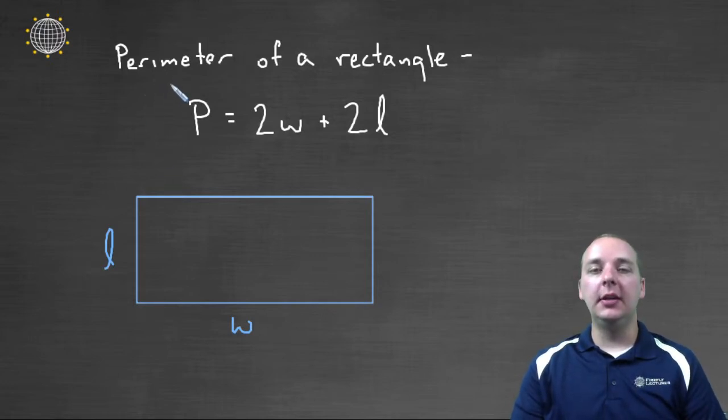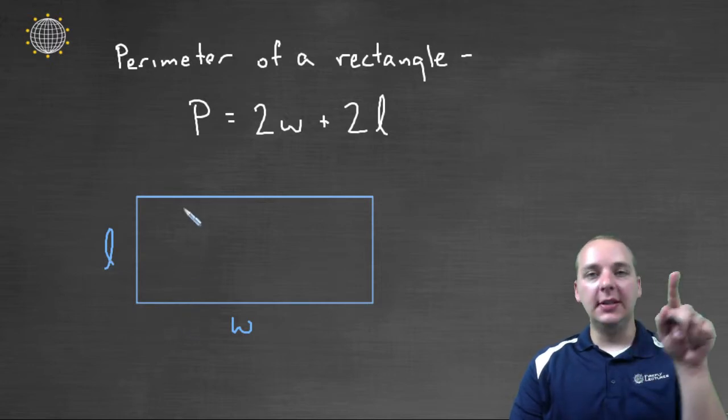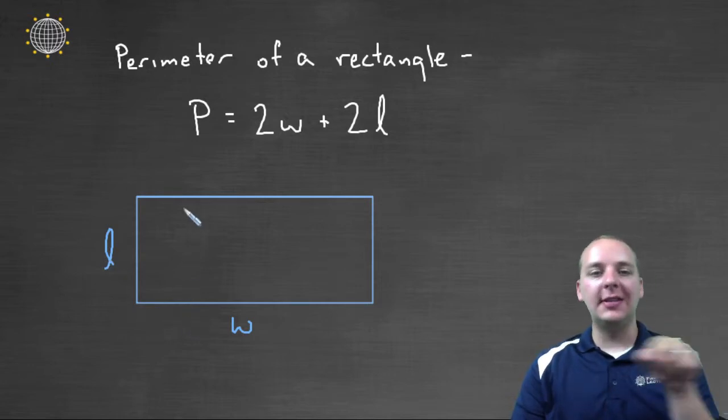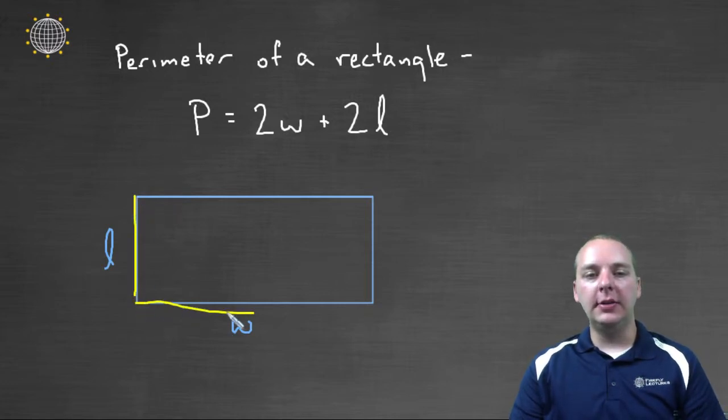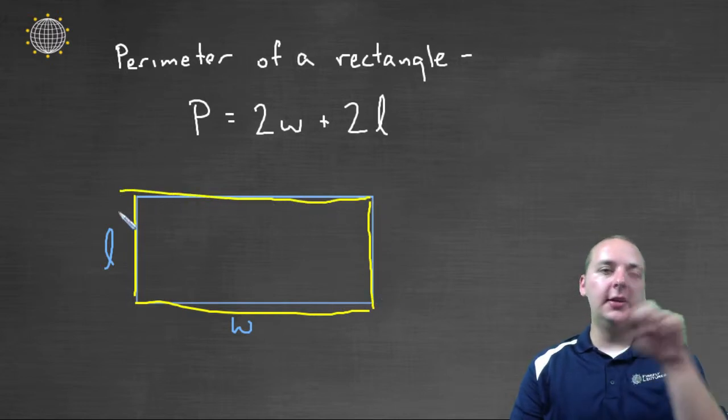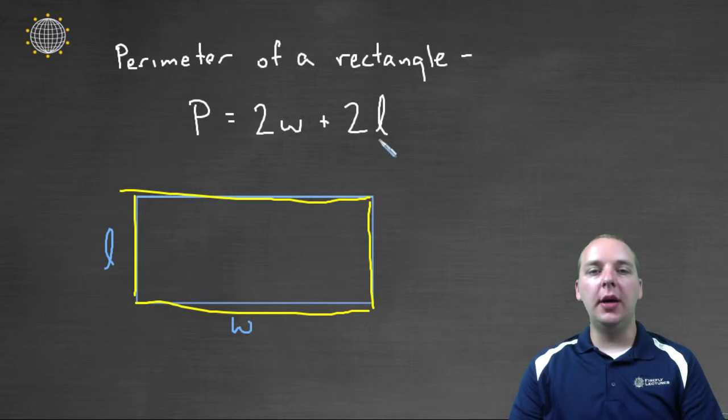A common one that we see in a lot of examples is the perimeter of a rectangle. See the perimeter depends on the length and the width of the rectangle. The perimeter is the distance around the outside of a rectangle. So if a rectangle has a length of L and a width of W, then the perimeter would be L plus W plus L plus W. That would be the distance all the way around. So we had two L's plus two W's, and that would be equal to the perimeter.